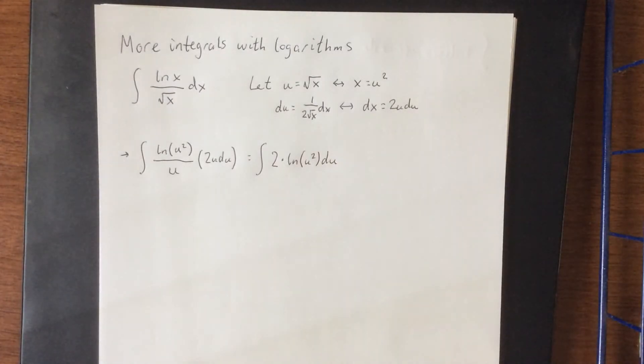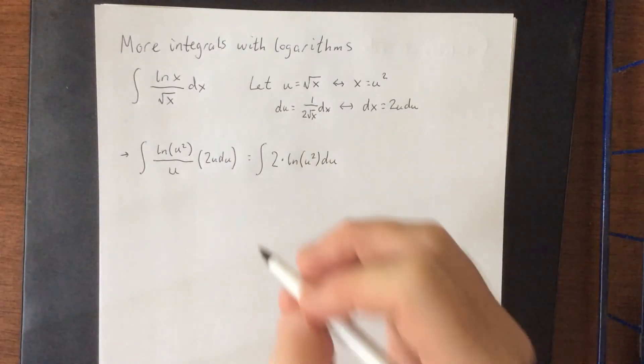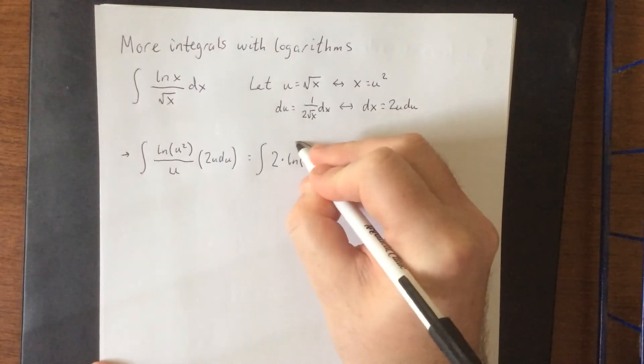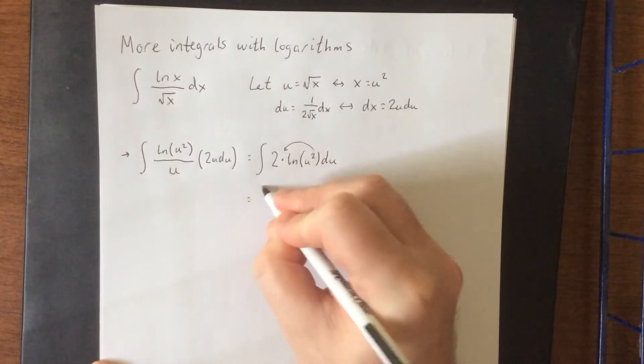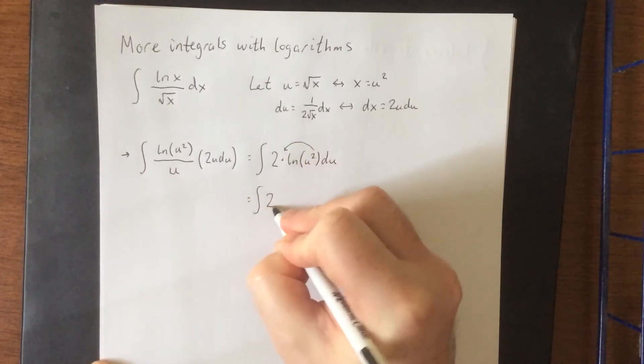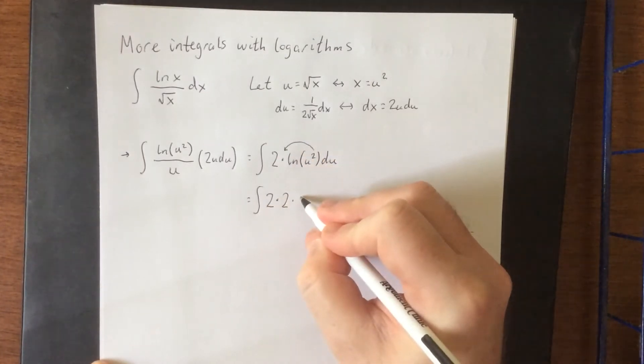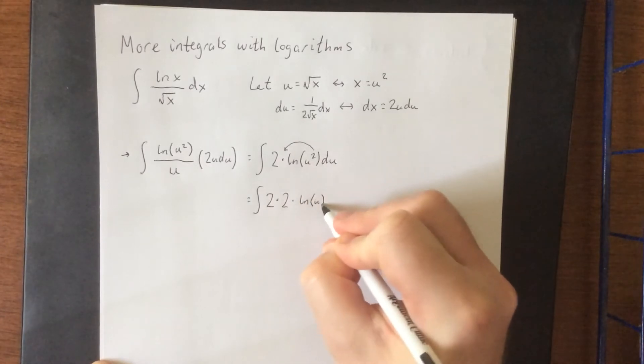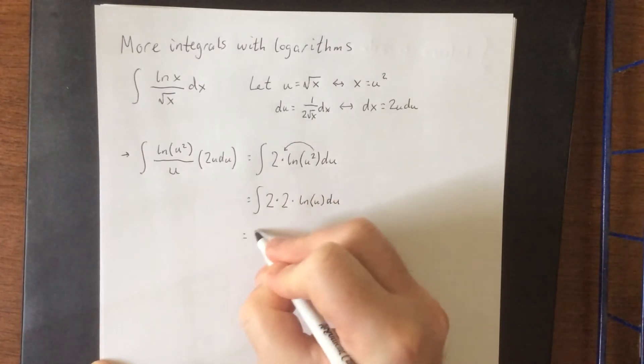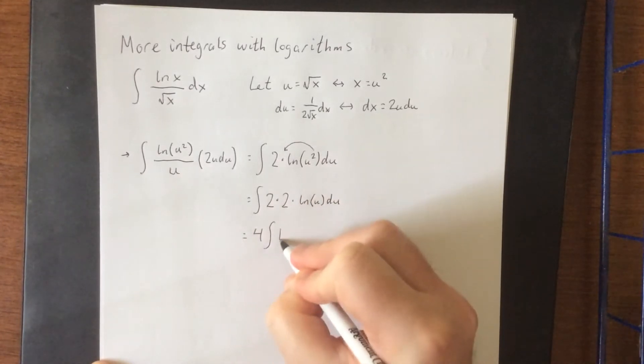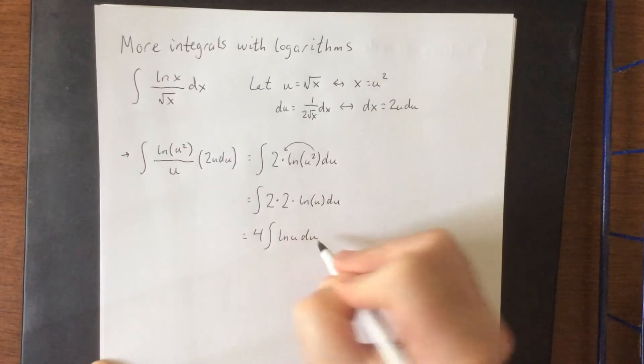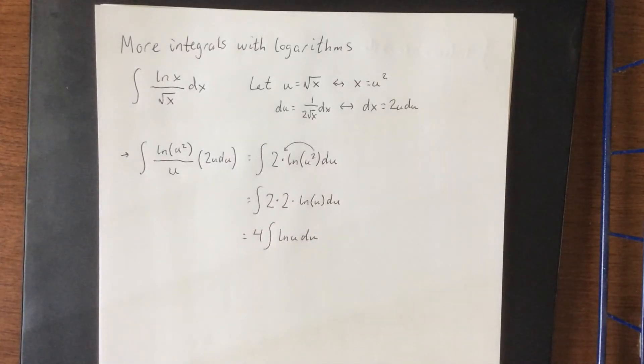Now this isn't exactly in the form that we want it, but we can pull this 2 down front as a coefficient. So the original coefficient of 2 stays put. The 2 that was the power will come down as a 2 as well. And we'll have the natural log of u du. Or if we factor those 2s out, we come up with exactly the formula that we derived in the previous video.